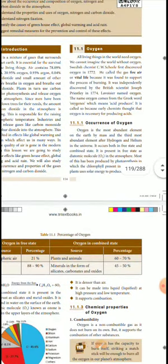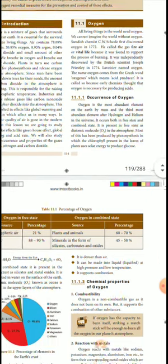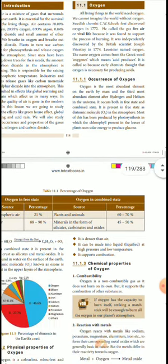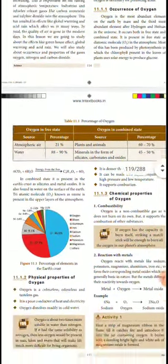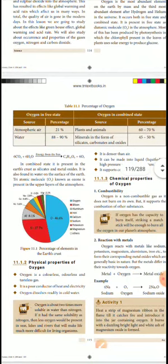Next, the occurrence of oxygen. It is the most abundant element on Earth by mass and the third most abundant element after hydrogen and helium in the universe. It occurs both in the free state and in the combined state. Most of the atmospheric oxygen has been produced through photosynthesis.